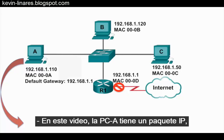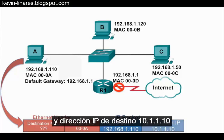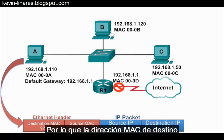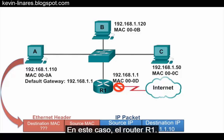In this video, PCA has an IP packet with source IP address 192.168.1.10 and destination IP address 10.1.1.10, which is an IP address on a remote network. So the destination MAC address will be that of its default gateway, 192.168.1.1, the router R1 in this case.